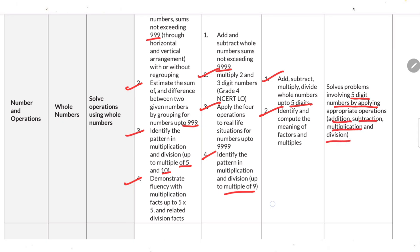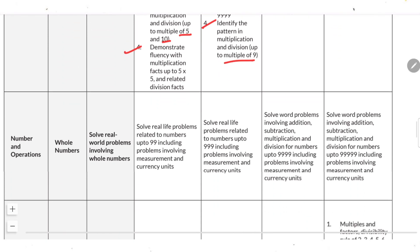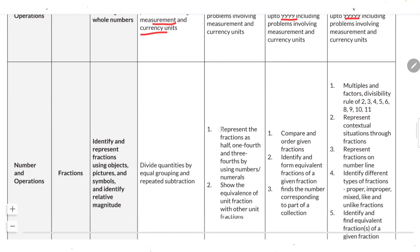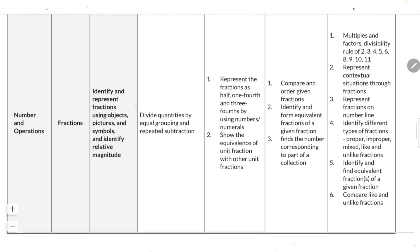Identify and compute the meaning of factors and multiples. Solve problems involving five-digit numbers by applying appropriate operations: addition, subtraction, multiplication and division. Solve real-life problems related to numbers up to 99, including problems involving measurement and currency units — and the same for numbers up to 999, 9999, and 99999.